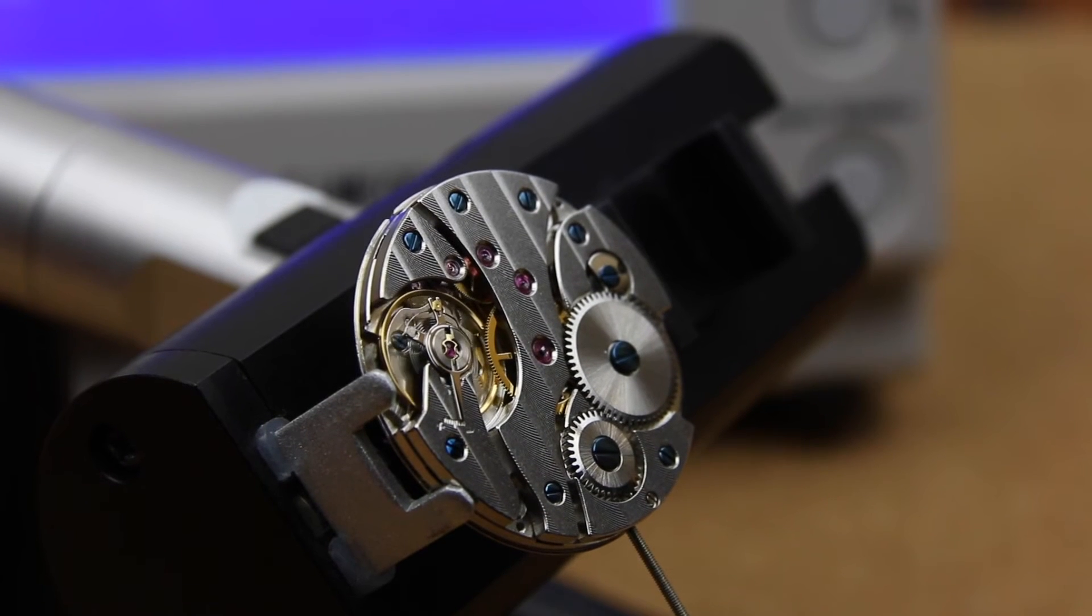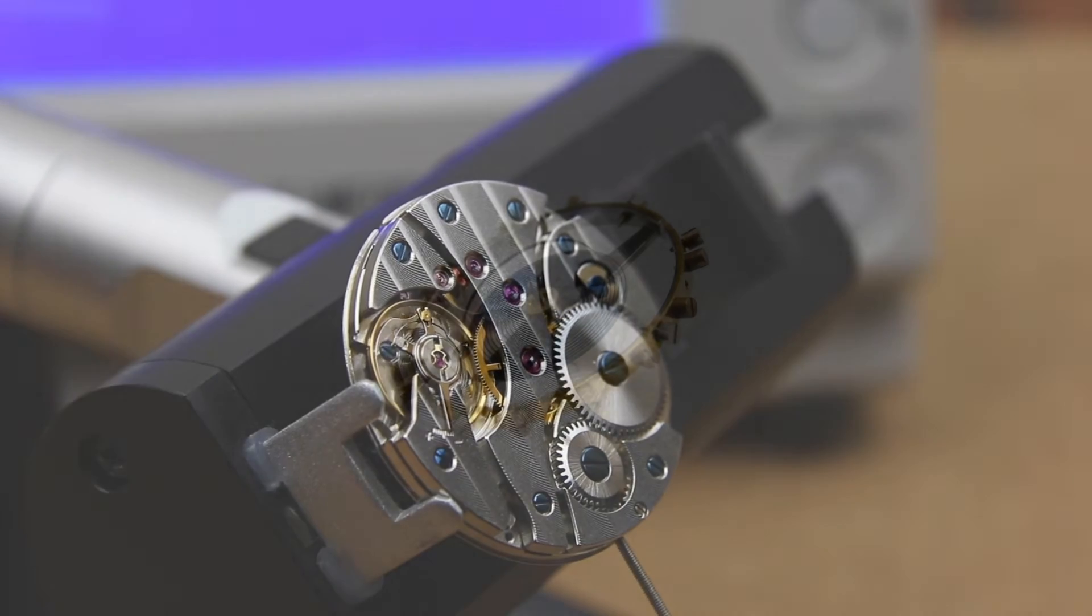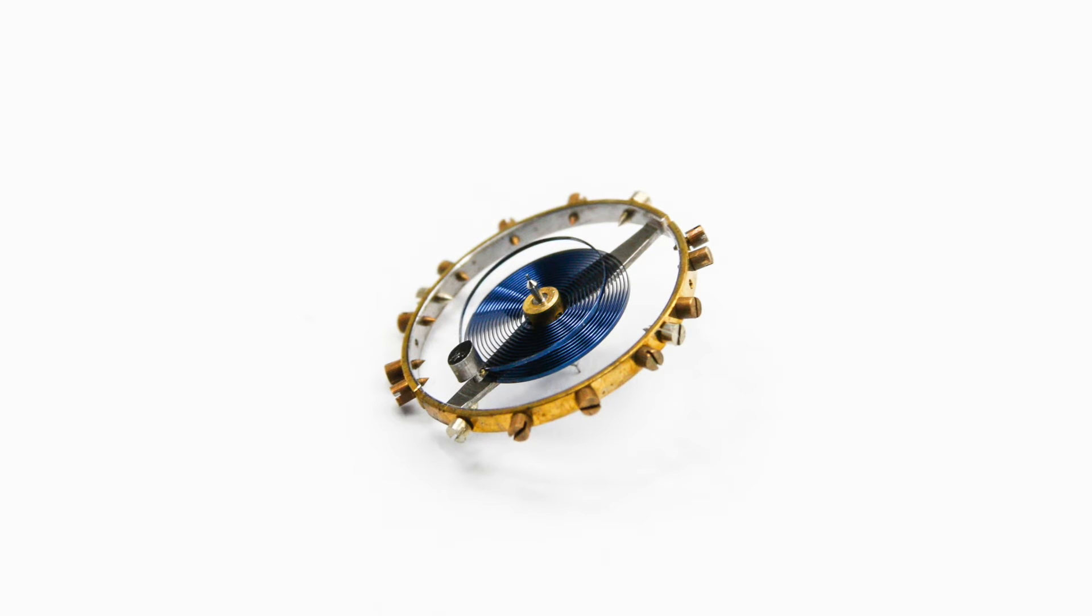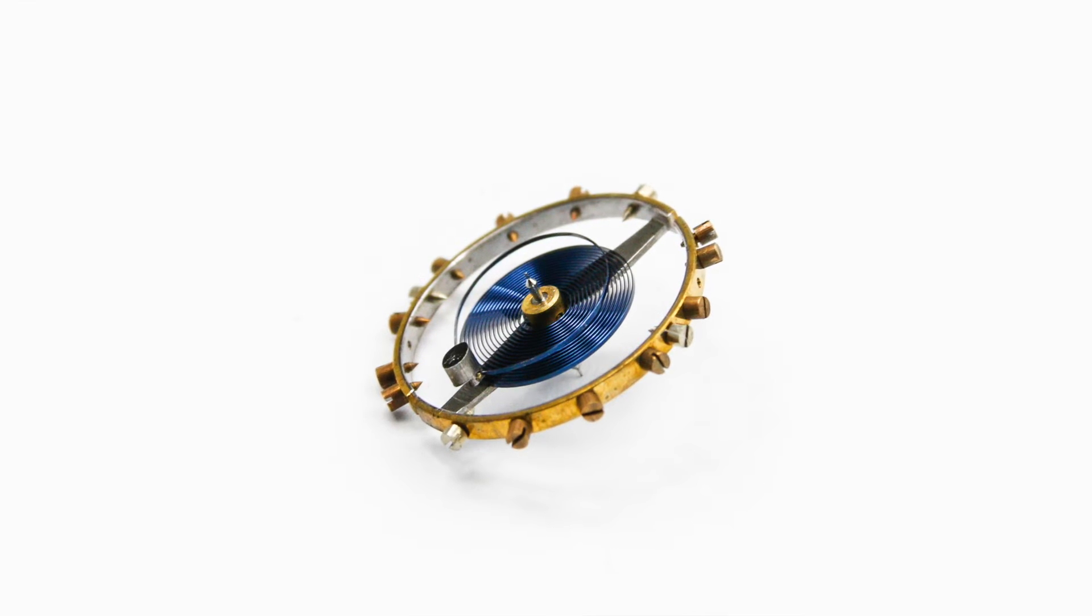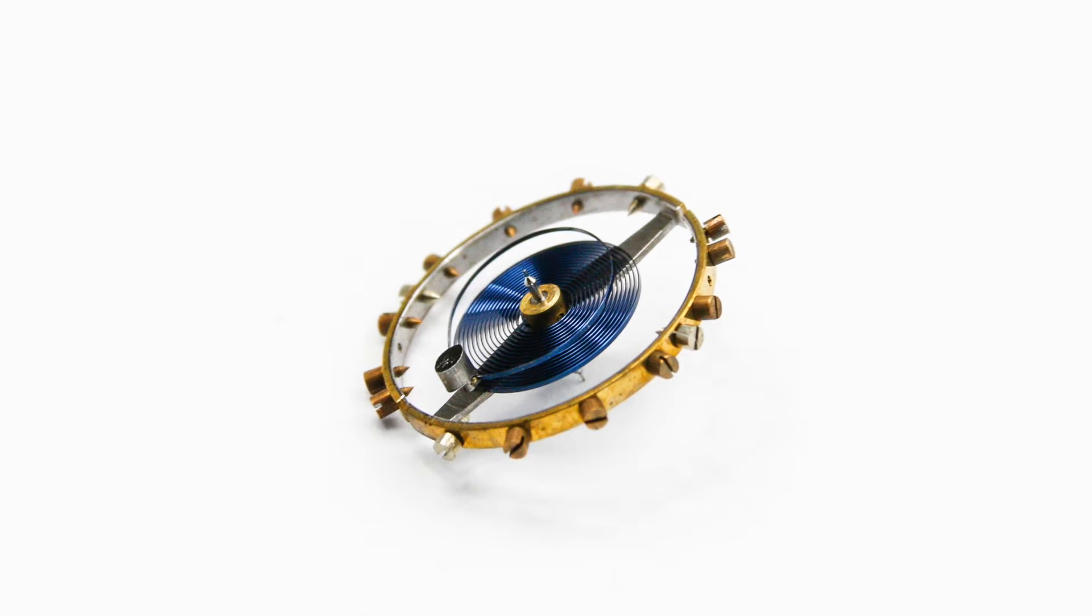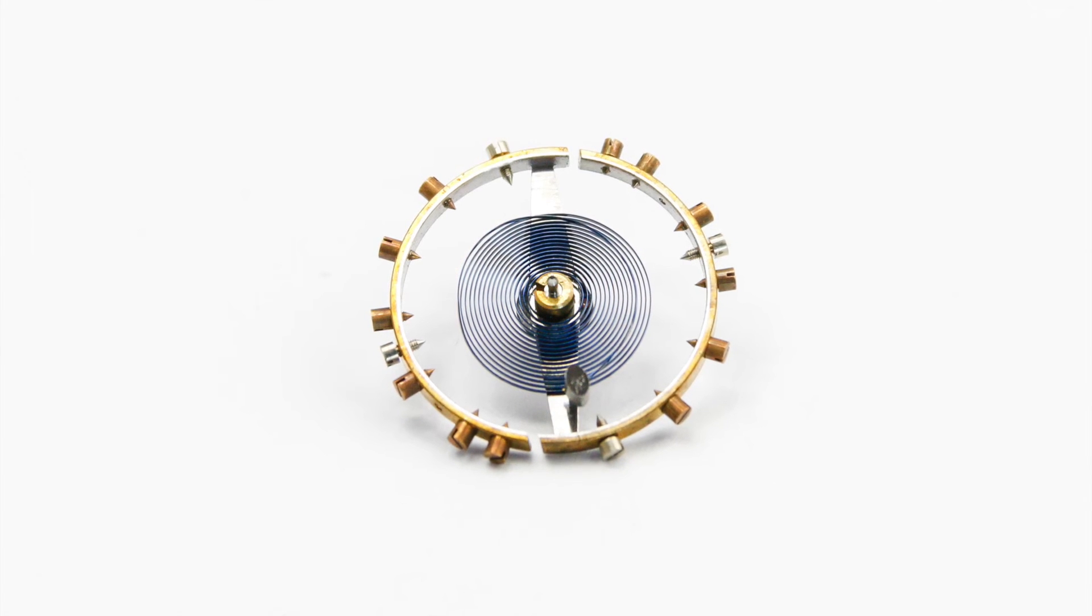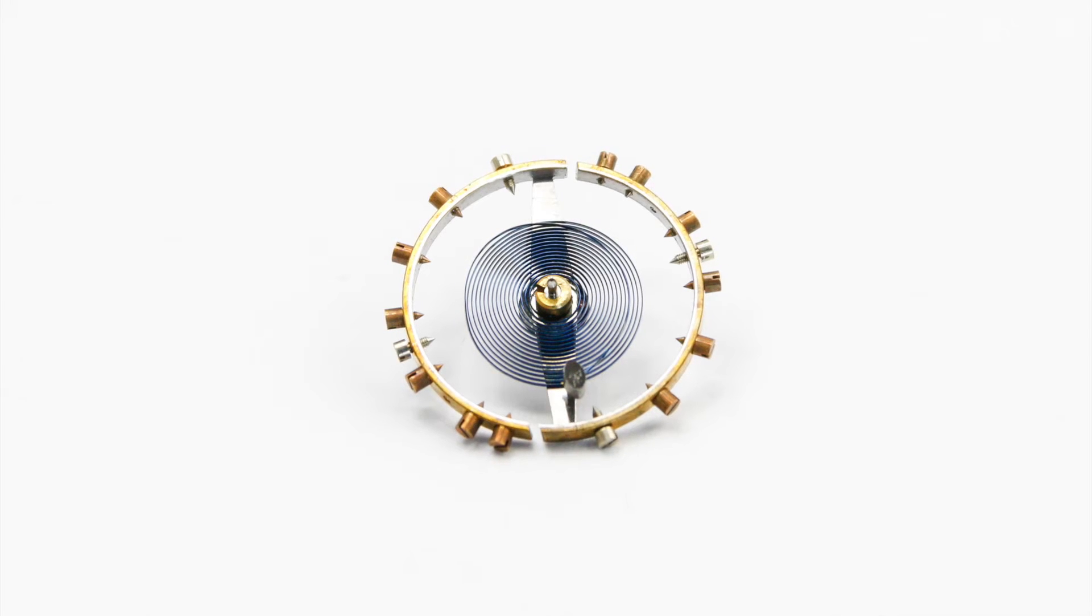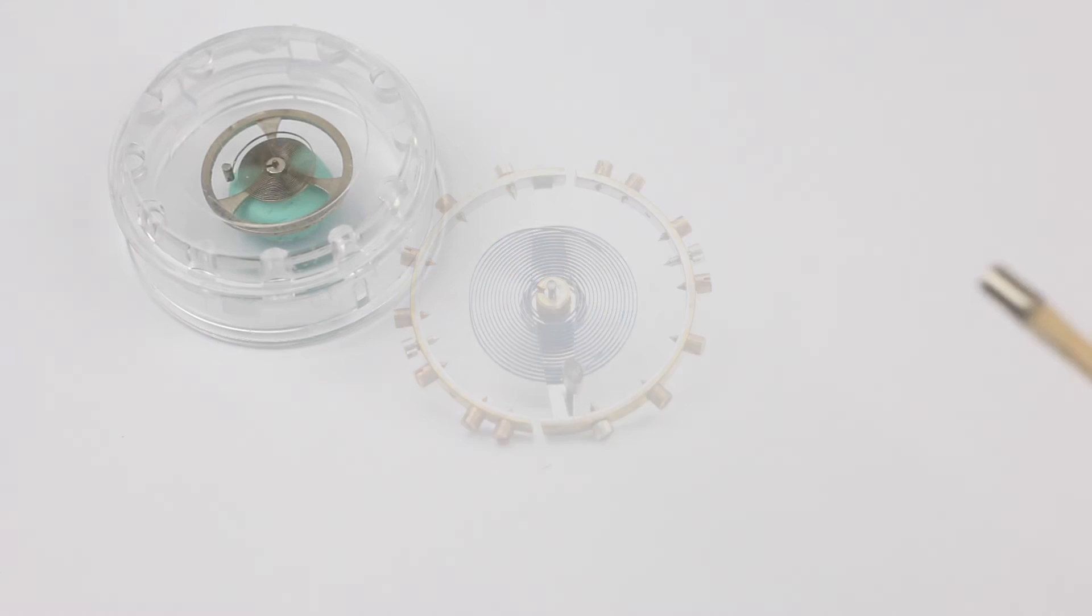And the reason for that is that the hairspring that basically governs the accuracy of a mechanical movement gets affected. And the way this works is that the hairspring of a watch is comprised of that little tiny metal spiral. And the way it regulates a watch is that the effective length of that hairspring determines how precise the watch is working. The longer the effective length of the hairspring the slower the rate of the watch is, the shorter the active length of the hairspring is, the faster the watch goes.